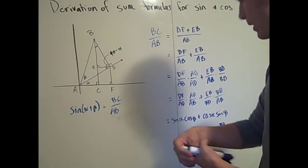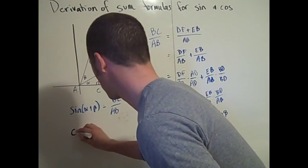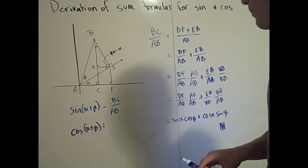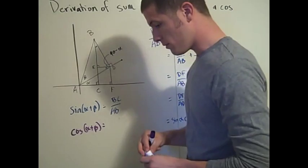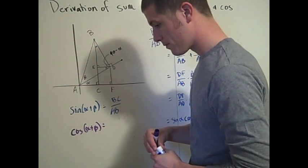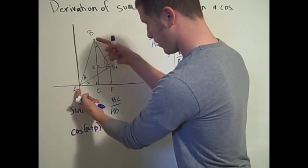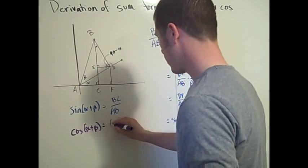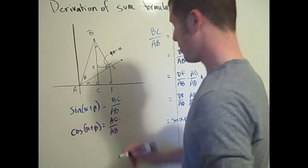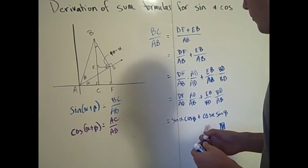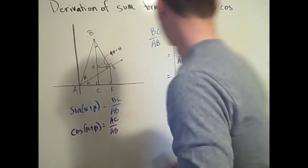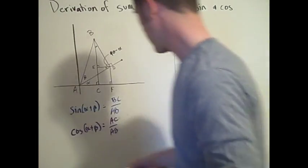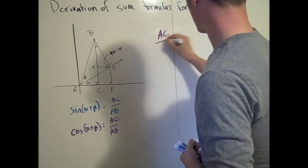We'll start with the same sort of idea: the cosine of alpha plus beta is AC over AB — adjacent over hypotenuse. So AC over AB is where we're going to start.